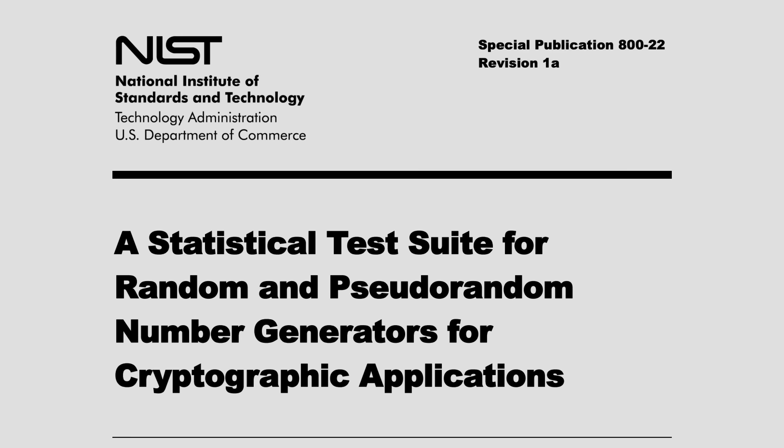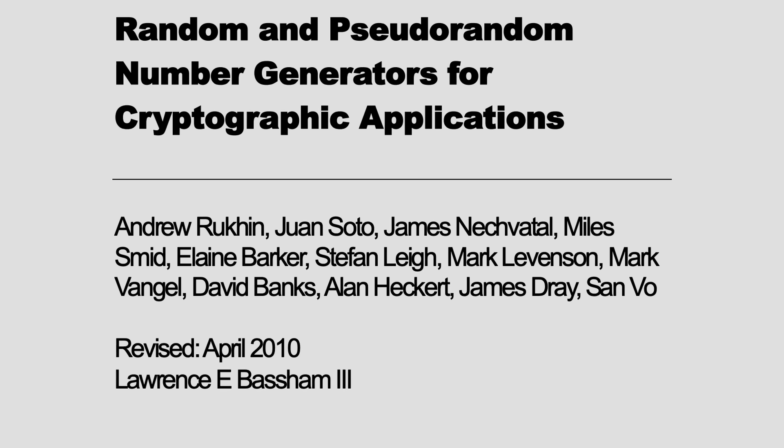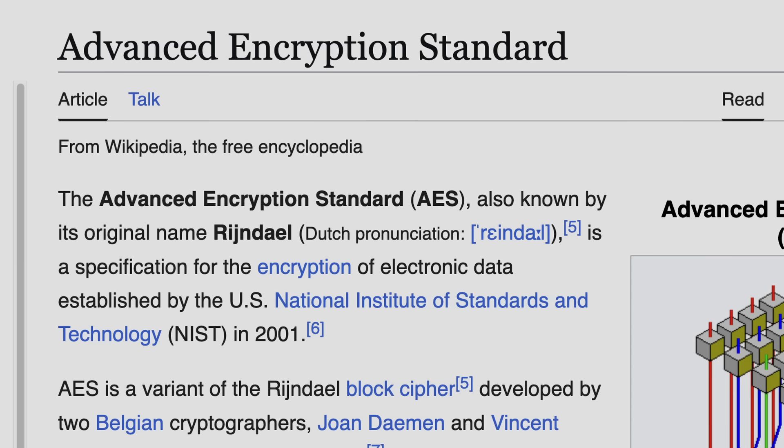It turns out that testing random number generators is more than a hobby for nerds. The US government doesn't pay 13 people to work on something unless it's pretty important. The Advanced Encryption Standard was developed by NIST in 2001 as a replacement for an older, weaker encryption standard. And there's no shortage of places it's used today.